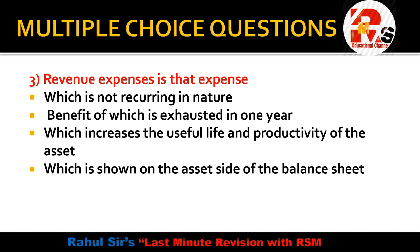Question three is from the chapter of Capital and Revenue Expenditures. The options describe revenue expenses as: not recurring in nature; benefit exhausted in one year; increases useful life and productivity of the asset; or shown on the asset side of the balance sheet. Revenue expenditure refers to regular recurring expenses. The benefit we get from revenue expenses is only for one year. So the right answer is: benefit of which is exhausted in one year.